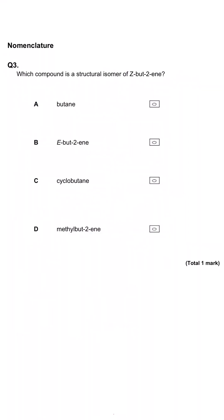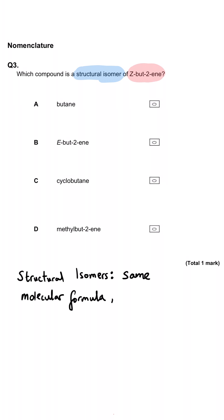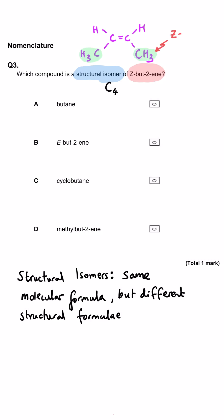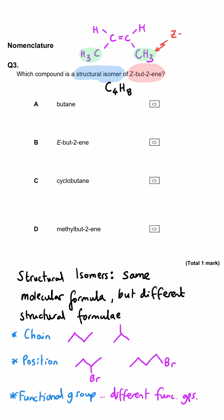This question is asking us which compound is a structural isomer of Z-but-2-ene. Structural isomers have got the same molecular formula but a different structural formula — in other words a different sequence or arrangement of atoms. So the first thing we need to look at is what the molecular formula of but-2-ene actually is. The Z and the 2 don't affect the molecular formula, so 'but-' means 4 carbons and it's an alkene so it will have eight hydrogens. Structural isomers come in three varieties: chain, position, and functional group.